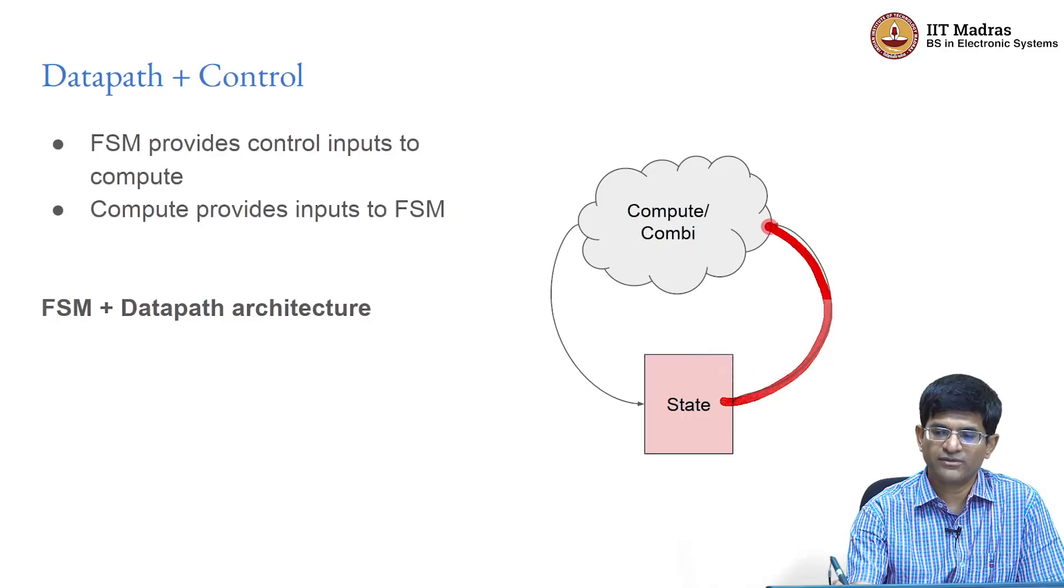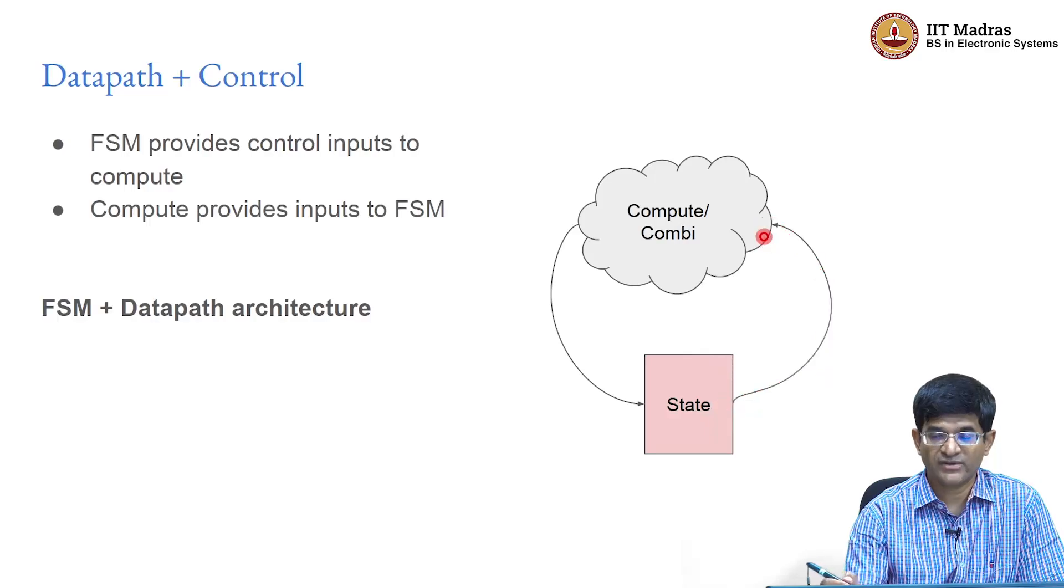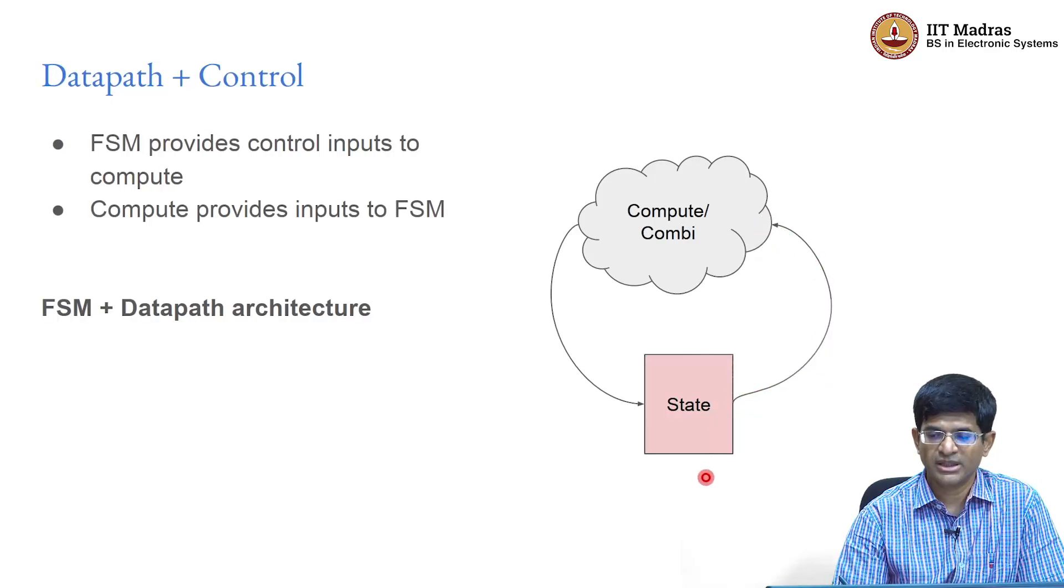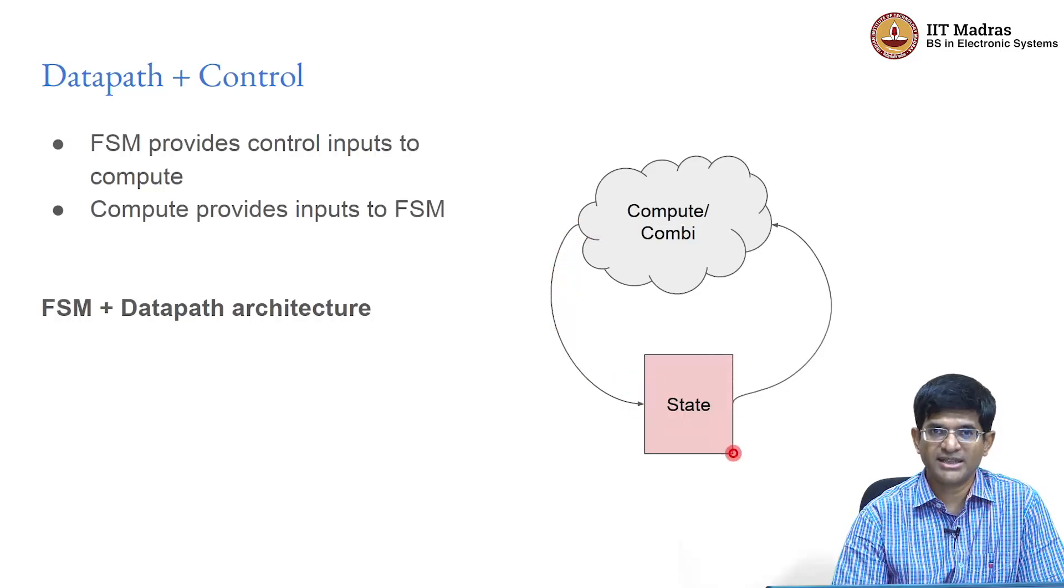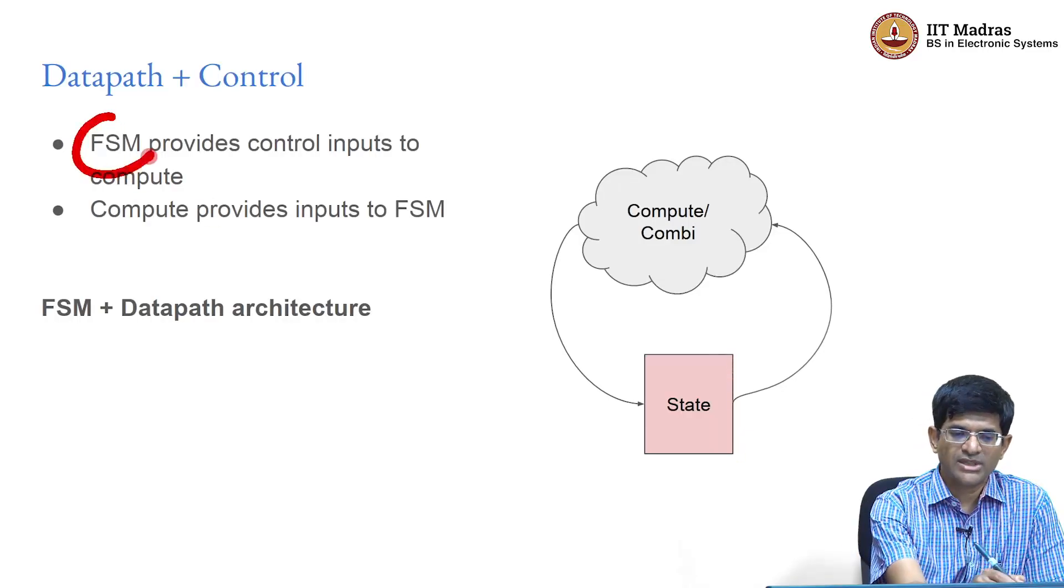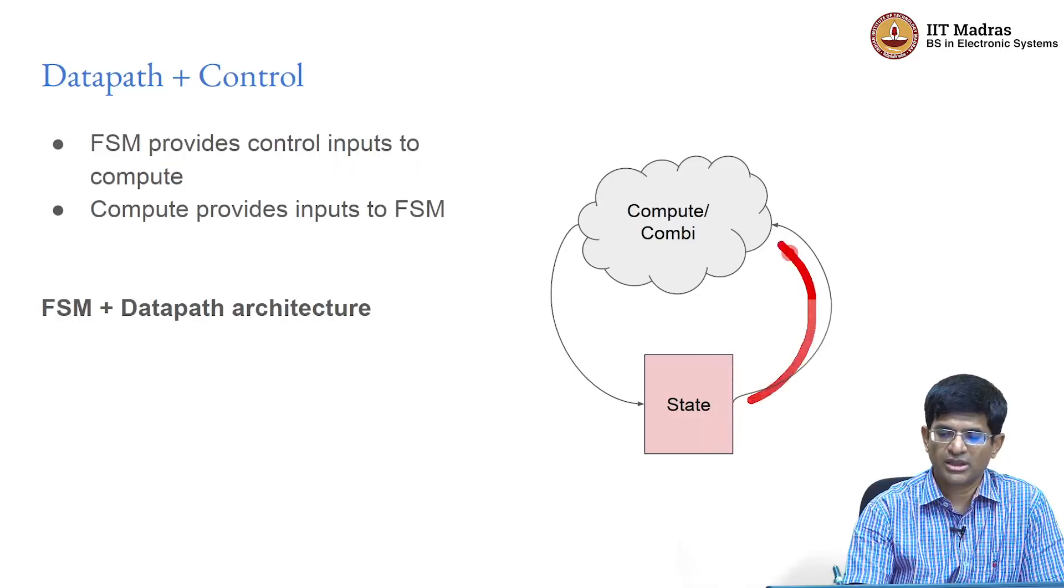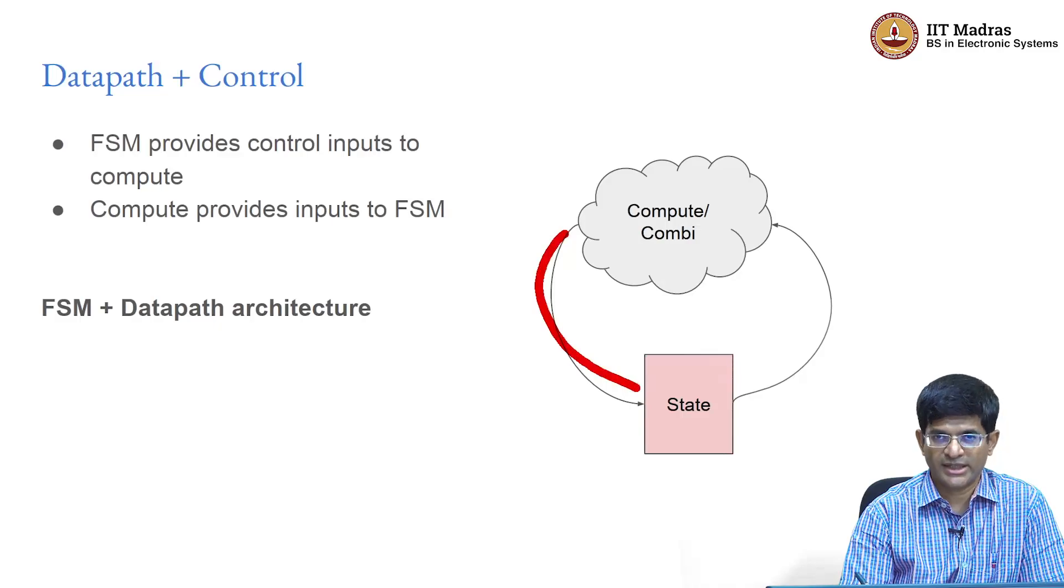The variables, the state variables as well as the present state itself, feeds into the compute and then finally comes back to update the state into the next state. Have I finished my computation? Is there still something left to be done? How should the variables representing the state be updated and so on? Here we have a notion of some kind of a finite state machine. The FSM provides control inputs to the compute and the compute provides inputs to decide where the FSM should go next.